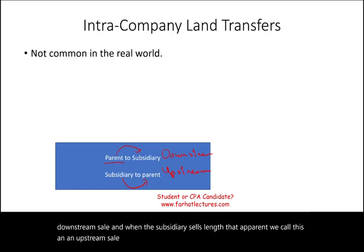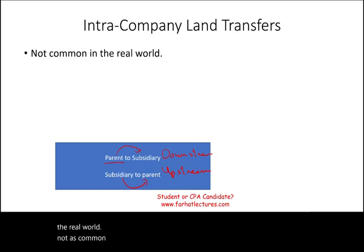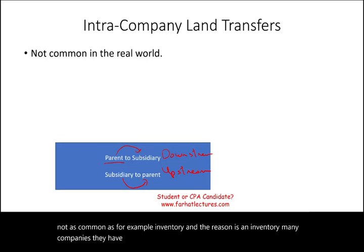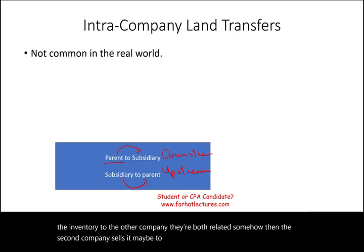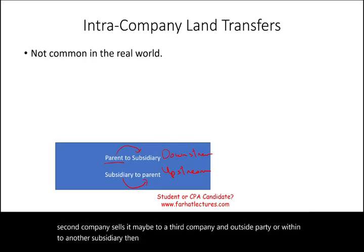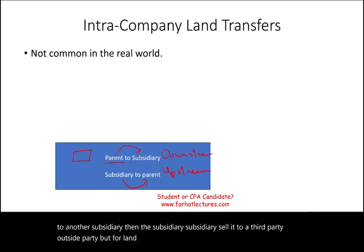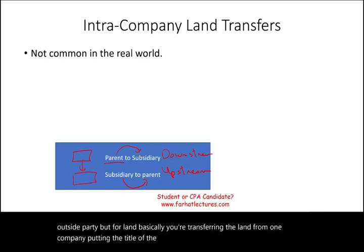This transaction is not common in the real world, not as common as inventory. With inventory, many companies have a retail distribution relationship where one company sells inventory to a related company, and then that company sells it to an outside party. But for land, you're essentially transferring the title from one company to another — not as common.